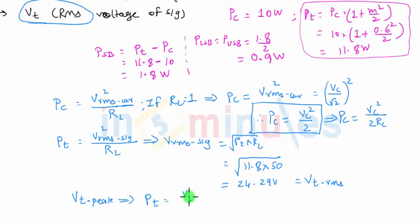The total power would be the peak value squared divided by 2 into RL. Once again, if RL is equal to, let's say if RL is 1, if RL is not given, in that case the total power will simply be equal to VT square, obviously the peak value, divided by 2.